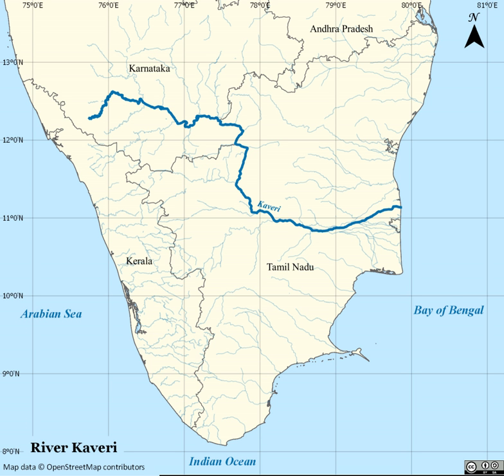After the river leaves the Kodagu Hills and flows onto the Deccan Plateau, it forms two islands in Mandya district: Srirangapatna and Shivanasamudra. At Shivanasamudra, the river drops 98 metres, forming the famous Shivanasamudra Falls, known separately as Gagana Chukki and Bara Chukki. Asia's first hydroelectric plant was on the left falls and supplied power to the city of Bangalore.